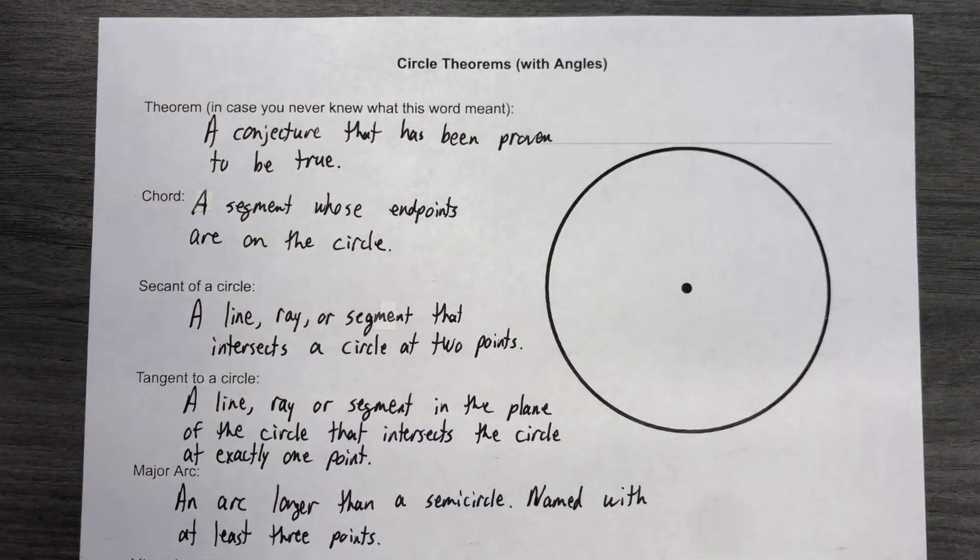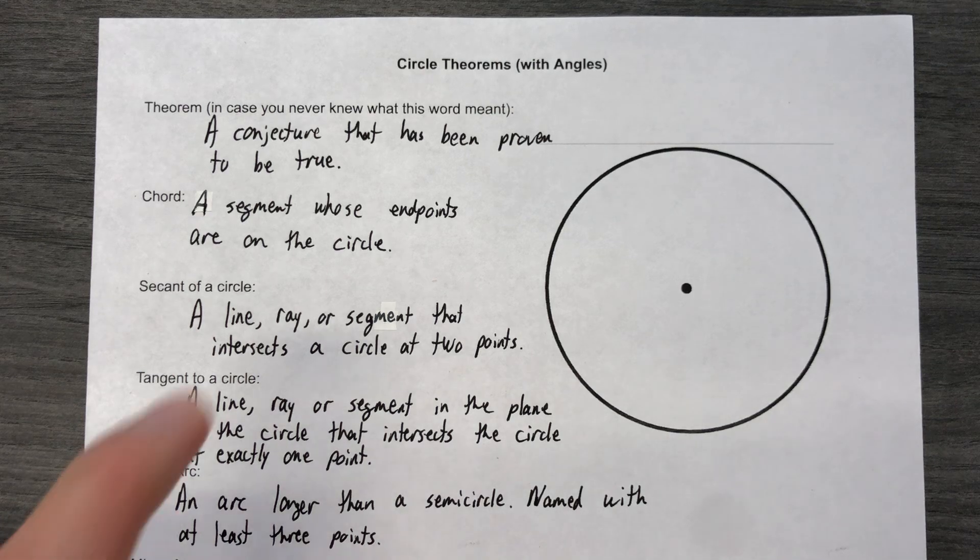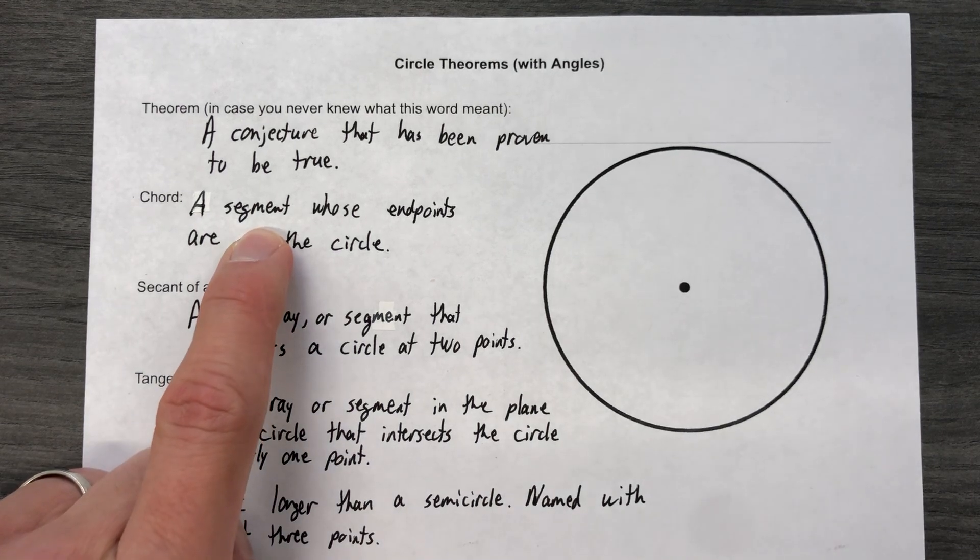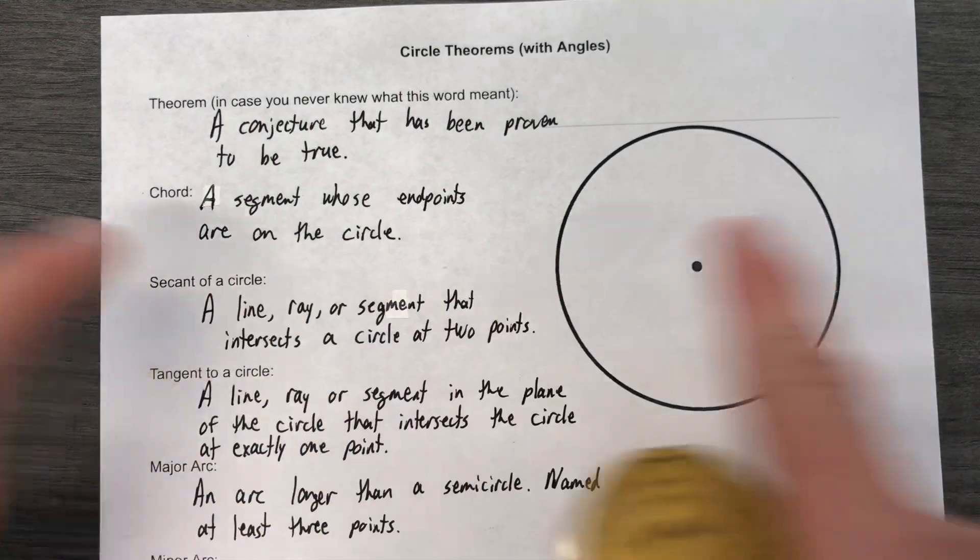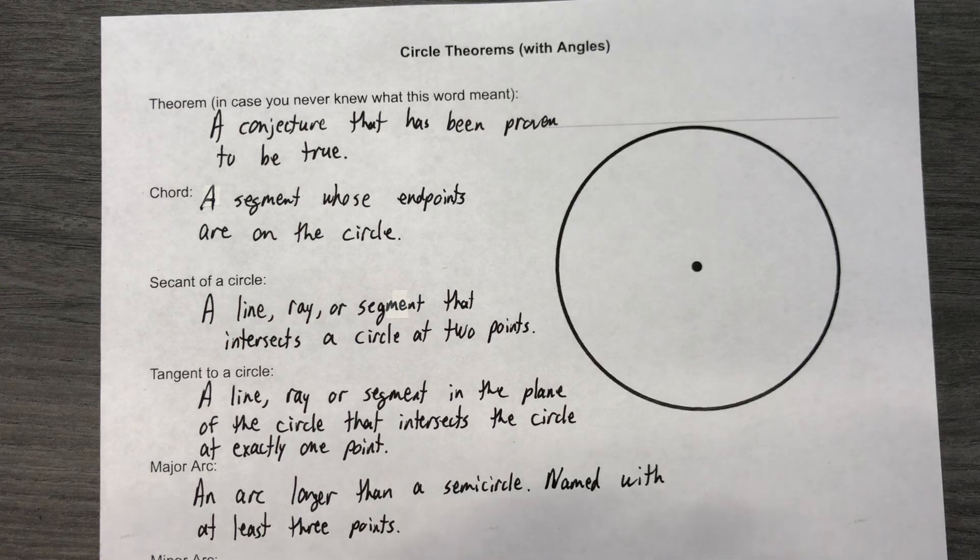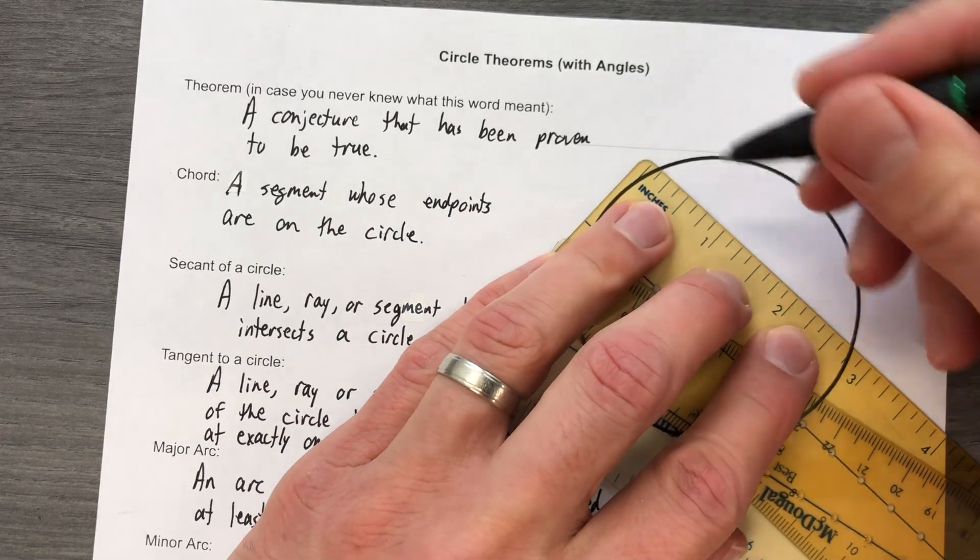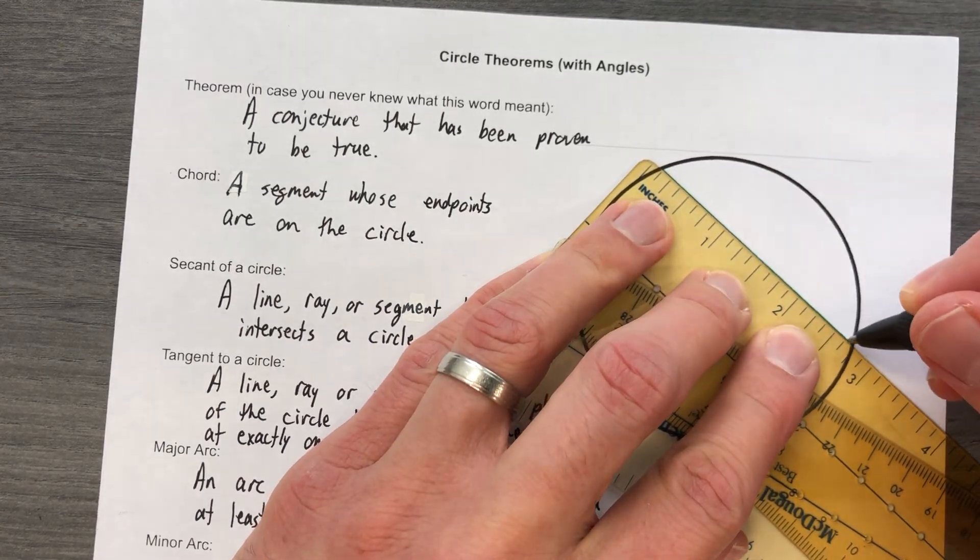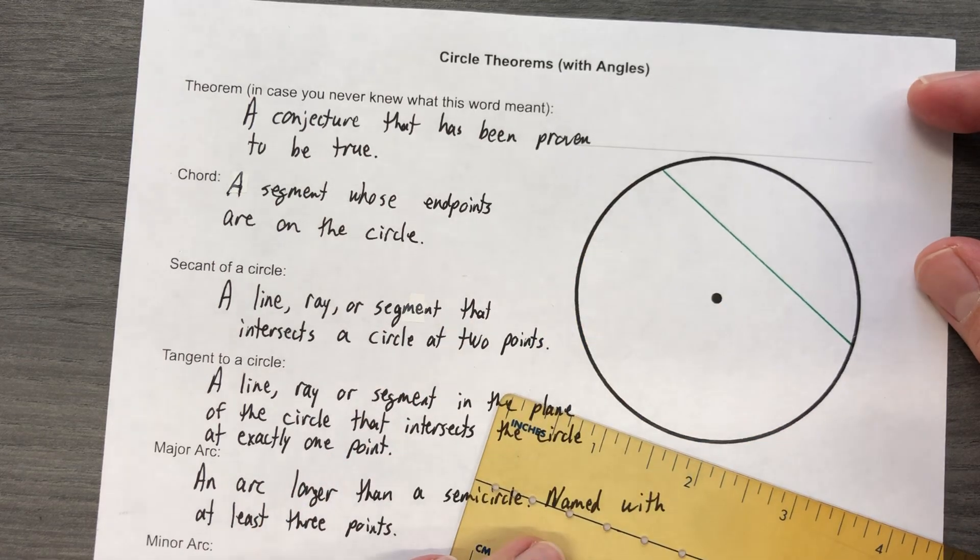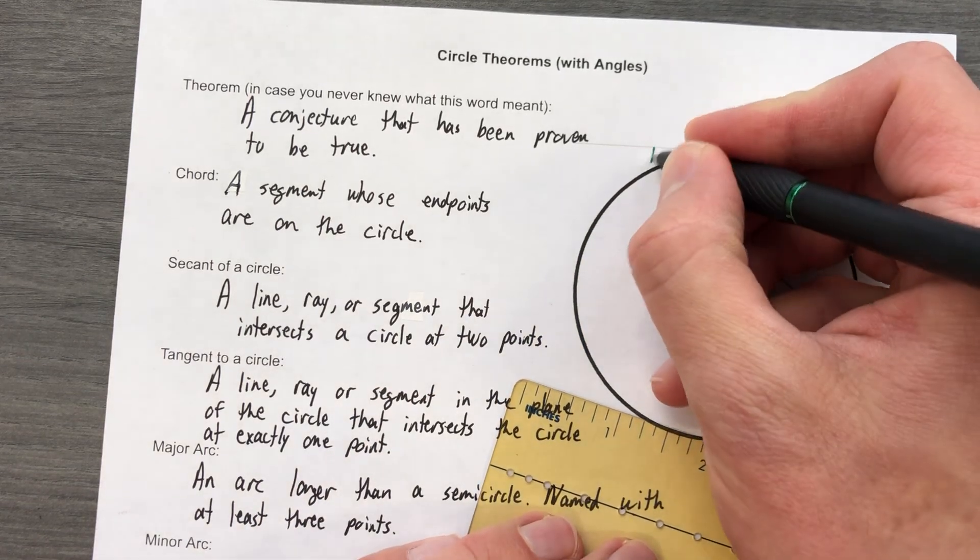A chord is a segment—segment has two endpoints, right—so it's gonna be like from here to here, not extended further, whose endpoints are on the circle. So I'm gonna draw a chord just so I can have a little frame of reference here. There's a chord and I'm gonna start naming some points.